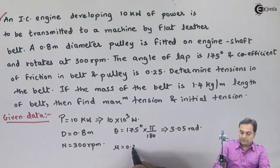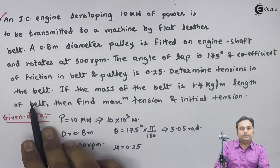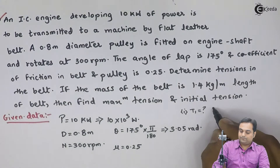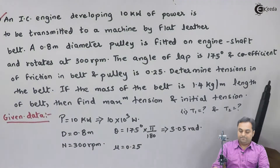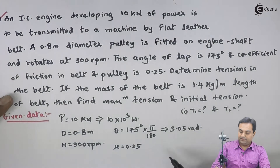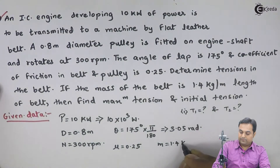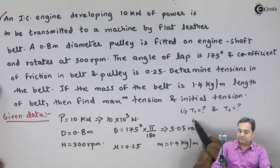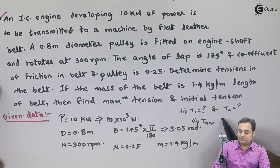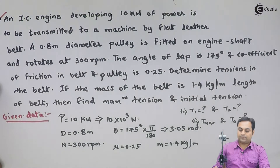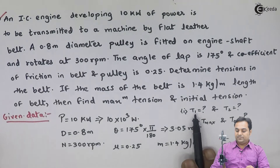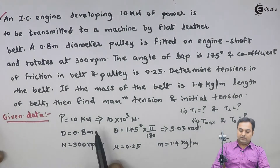The coefficient of friction mu is 0.25. We have to determine tensions in the belt, that is values of t1 and t2. If the mass of the belt is 1.4 kg per meter, we need to find maximum tension and initial tension. The first question is to calculate the tension in the tight side and tension in the slack side.